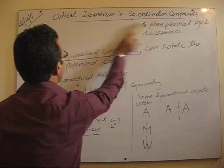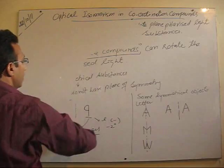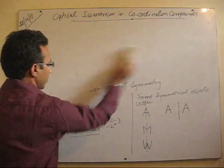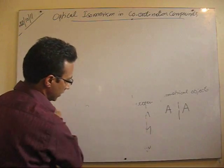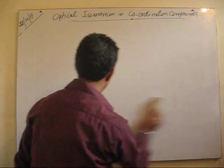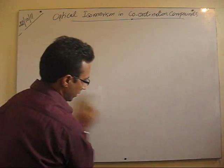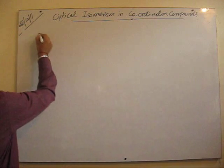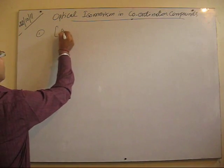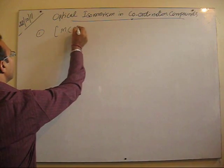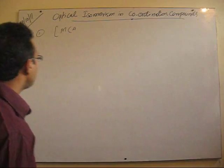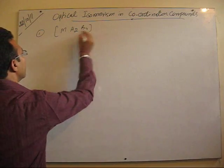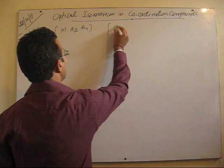Now let's apply this optical isomerism to coordination compounds and see what type of coordination compounds are optically active. I will take the first example — an octahedral compound of the type MA₂B₄. Let's take one example of a complex of iron with CN ligands.